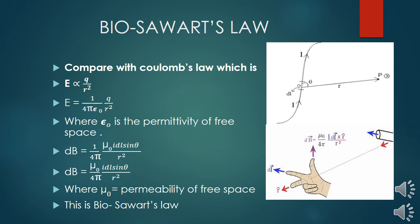We have taken out the magnitude of this magnetic field by Biot-Savart's law. Now we take out the direction of this magnetic field using the right-hand palm rule. As shown in the diagram, two fingers of the right hand show the direction of the position vector R and the current element DL, and the thumb points in the direction of the field, which is in the inward direction — shown by a cross as in the diagram.